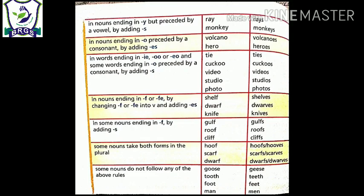In words ending in I-E-O, E-O, and some words ending in O preceded by a consonant, we add S. If our nouns end in these letters - tie, cuckoo, video - let us take examples of these three. If they end in I-E-O, E-O, we add only S. Understood?